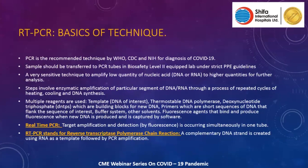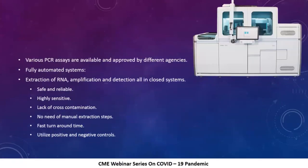RT-PCR stands for reverse transcriptase polymerase chain reaction, used when complementary DNA is created using RNA as a template followed by PCR amplification. Since coronavirus is an RNA virus, we first convert RNA into DNA and then amplify it. Various commercially available PCR assays exist and are regulated by multiple international and national agencies. Fully automated systems are preferred because they reduce the risk of contamination or cross-contamination in a closed controlled environment, making them safe, reliable, highly sensitive, and with fast turnaround times. They always use positive and negative controls.